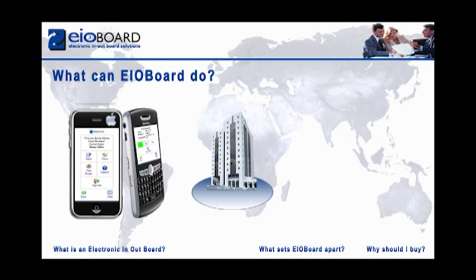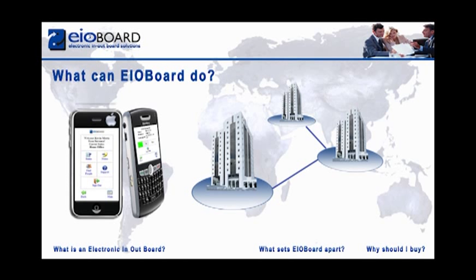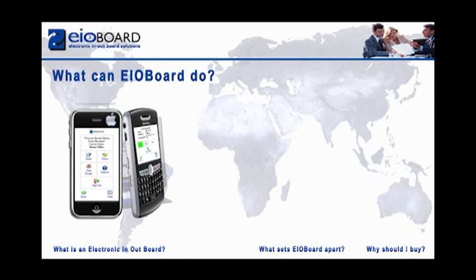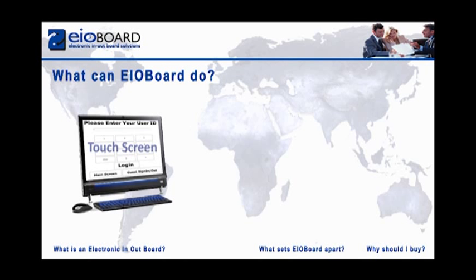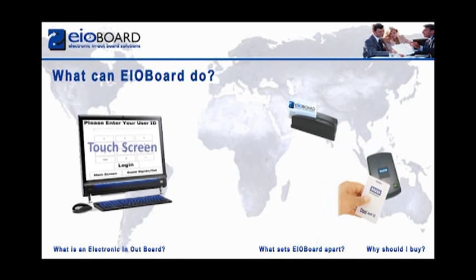EOBoard can not only track a single building, but multiple buildings in any location, whether it be in the same area, state, or even the same country. The EOBoard kiosk can be placed around your building so users can update their status from anywhere using several devices such as a magnetic or HID card reader or fingerprint scanner.